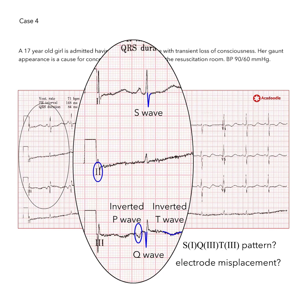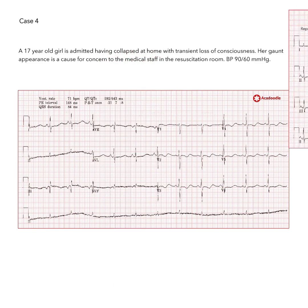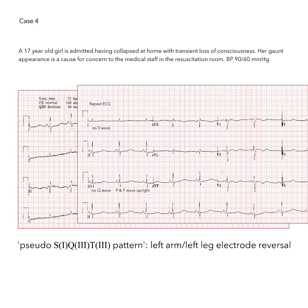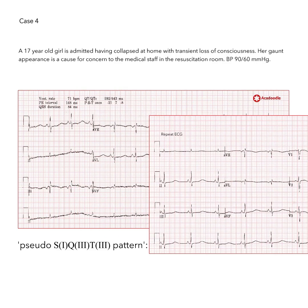The only way of being sure is to repeat the ECG paying careful attention to correct electrode placement. When we do this, in this case, we find that the abnormalities present in the standard limb leads on the index ECG are no longer present. This is a pseudo S1Q3T3 pattern, probably due to left arm, left leg electrode reversal.